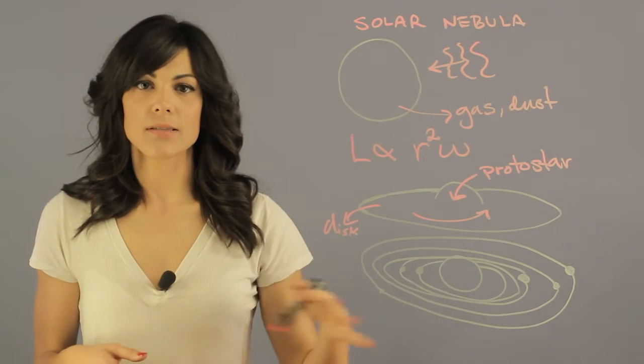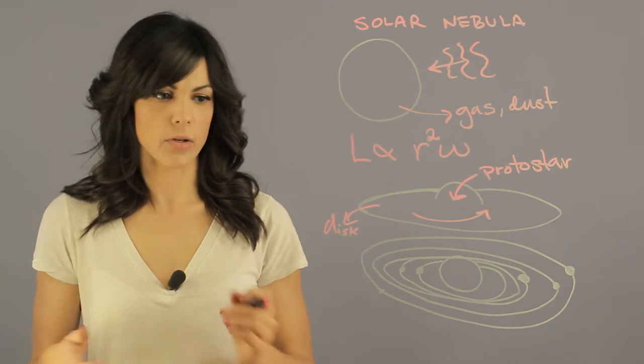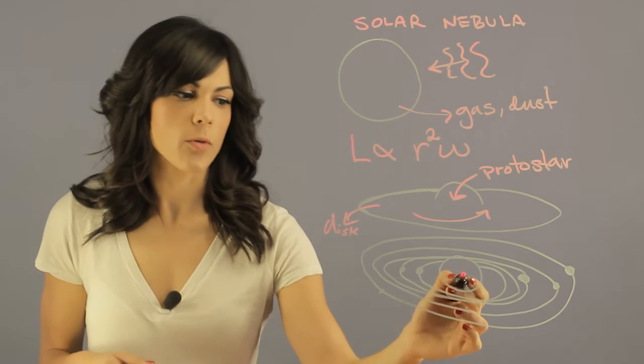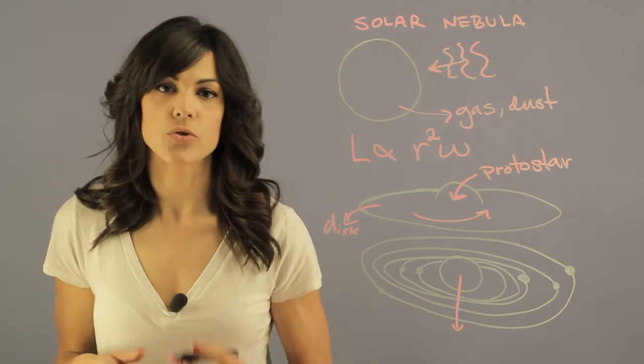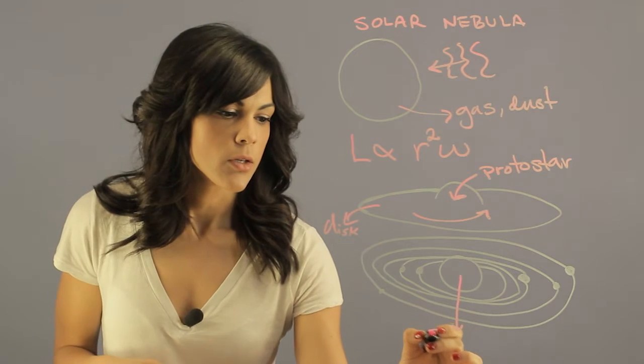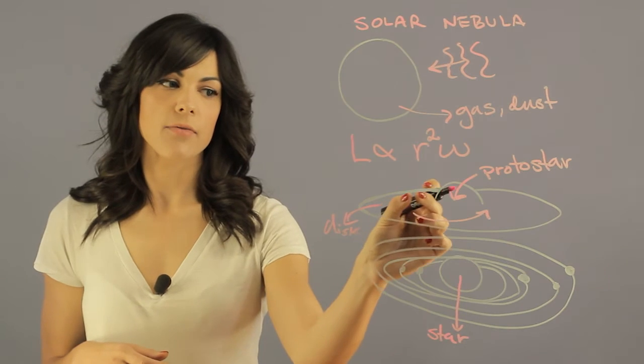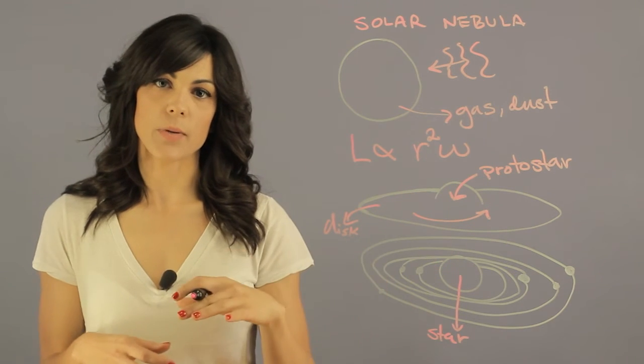So you have all this gas and dust accumulating everywhere and colliding. They become bigger and bigger. Eventually, you form a star at the center once the conditions are right for fusion. So you get the Sun. And then what happens is that you have all this disk that is still spinning.